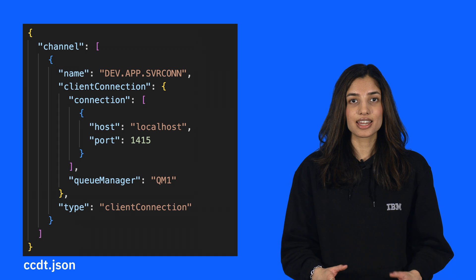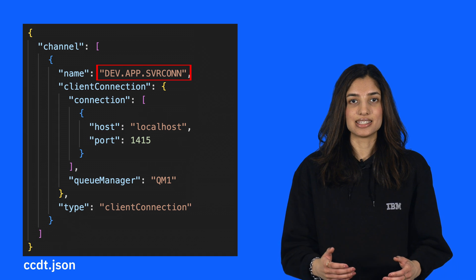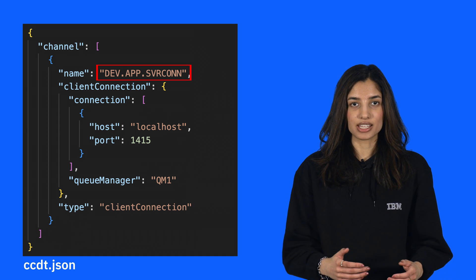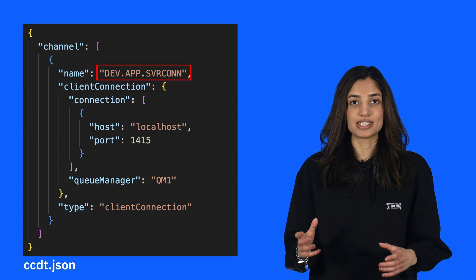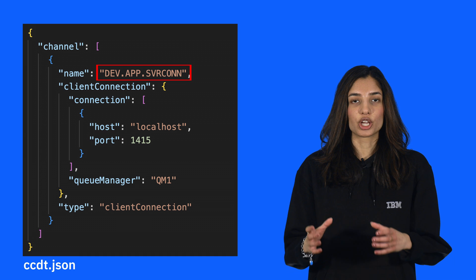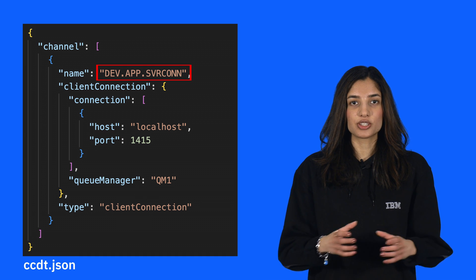The client connection name is dev.app.svrcon, and there'll be a corresponding server connection of the same name going from the queue manager to the application.